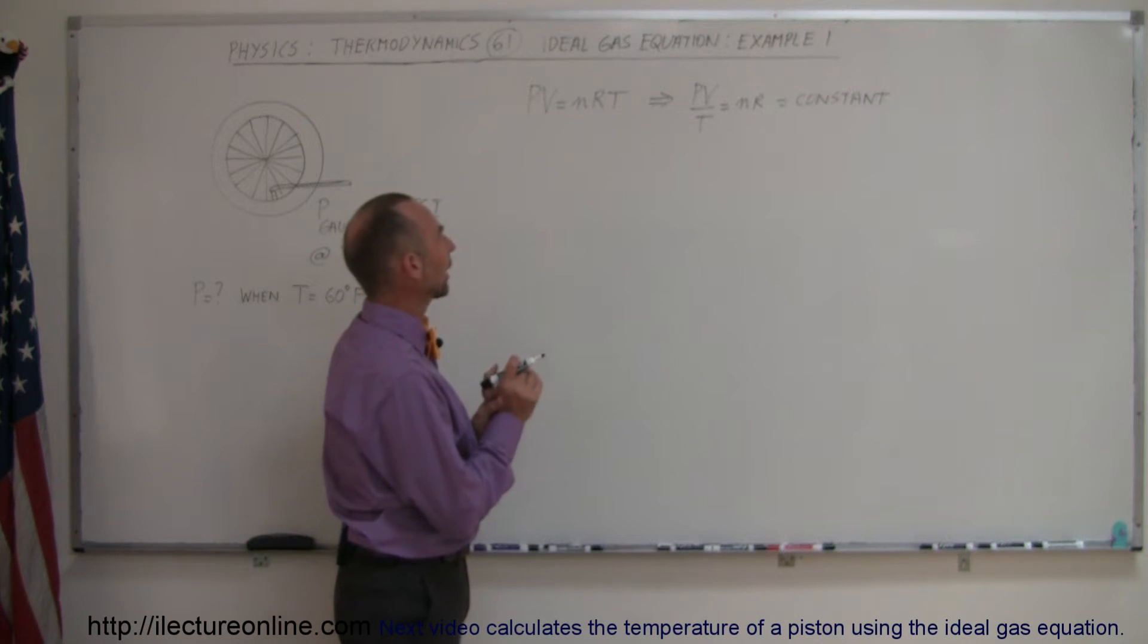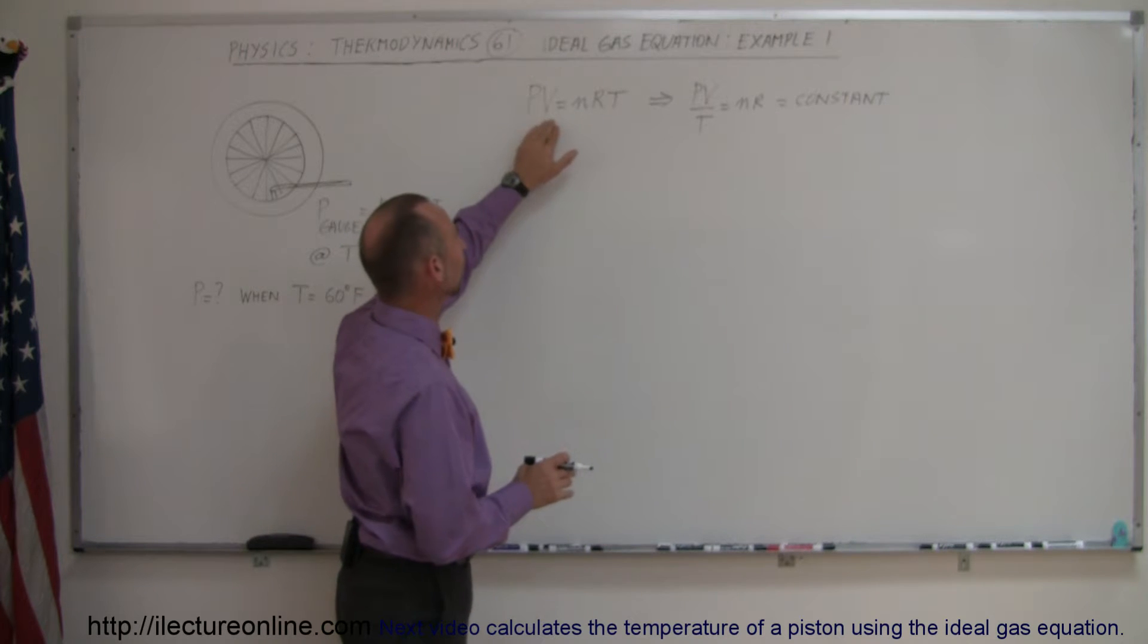8.31 joules per mole per kelvin, P is pressure, V is volume, T is temperature.